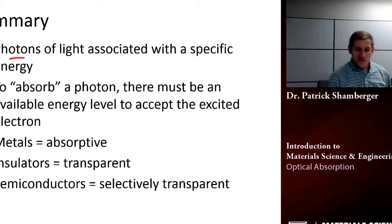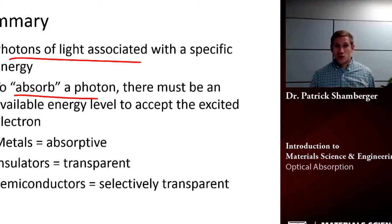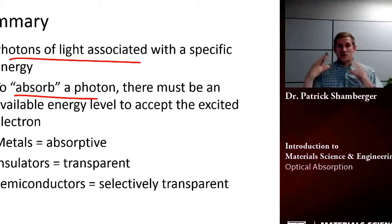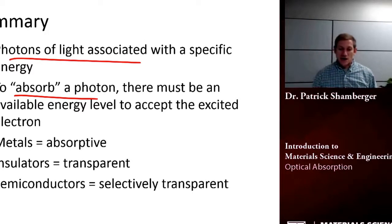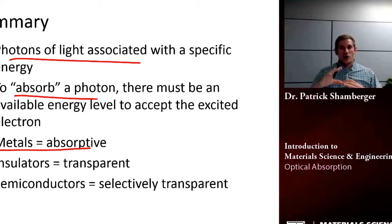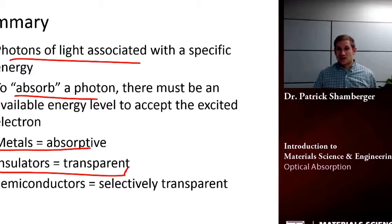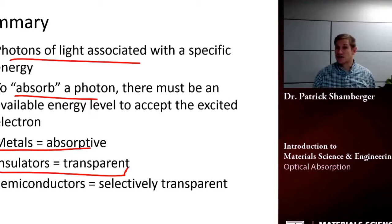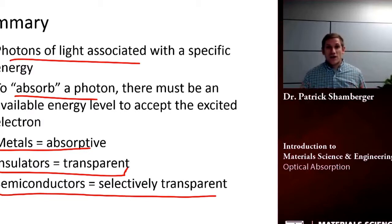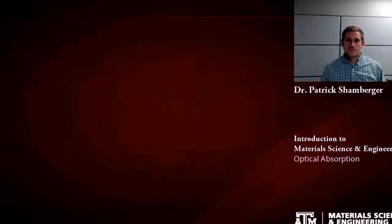So in review, photons of light are associated with a specific energy. In order to absorb a photon, we have to excite an electron from the valence band up to some unoccupied space. This is easy to do for metals, because there are unoccupied orbitals immediately above those occupied orbitals. It's very difficult in insulators, things with large band gaps, at least in the visible part of the spectrum. Semiconductors—it's going to be very wavelength dependent and very dependent on the band gap of that particular semiconductor.